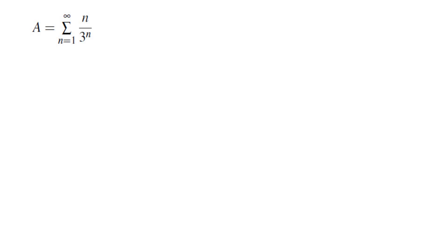One of them works like this. Take this sum multiplied by 3. You're going to end up with the sum of n over 3 to the power of n minus 1. Simplify that by replacing n by n plus 1 and breaking it up into two different sums. You get the sum of n over 3 to the power of n plus a geometric sum.